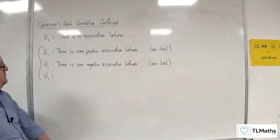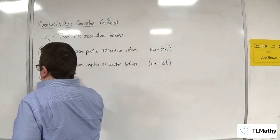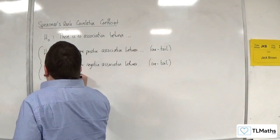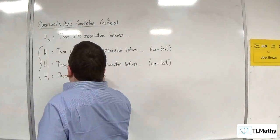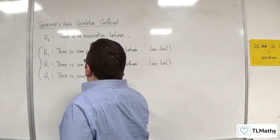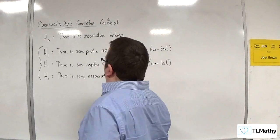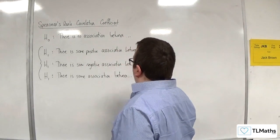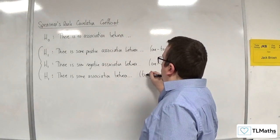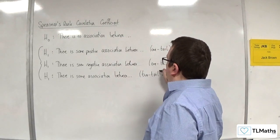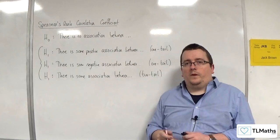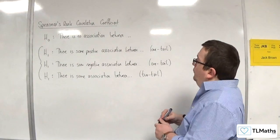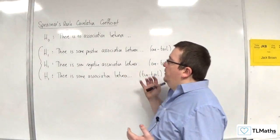Finally, we can state there is some association. Don't know whether it's positive or negative, but there is some association between the two variables. That would be our two-tailed test. We've got these two one-tailed tests and the two-tailed test.